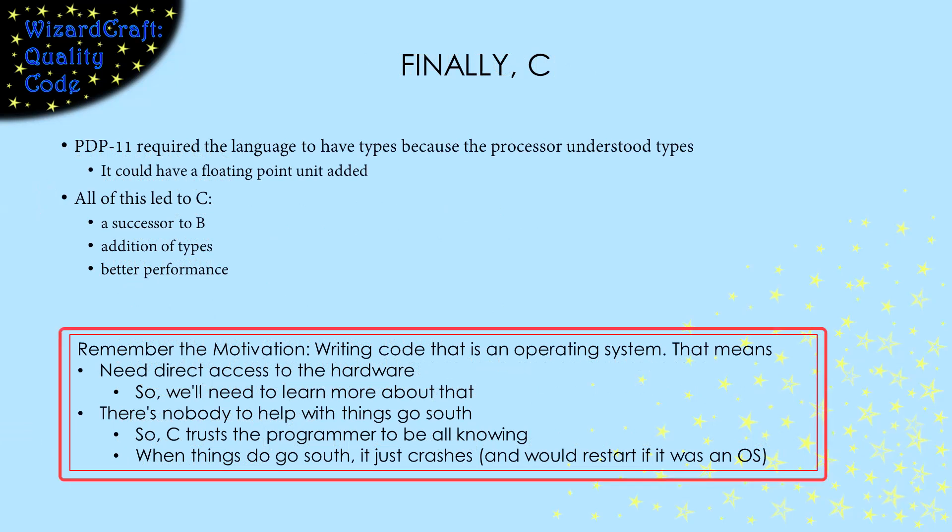The point of this is to remember the motivation behind developing C. They were using it to write code that is an operating system, and that means two critical things drove the design of the language. First, it's an operating system — it needs direct access to the hardware. So C has ways to directly change the memory.